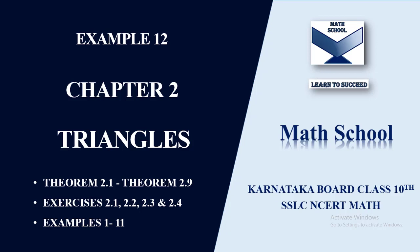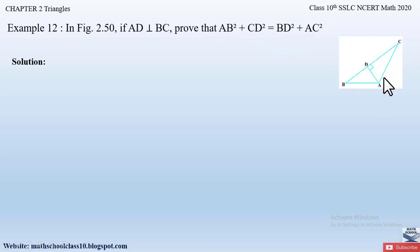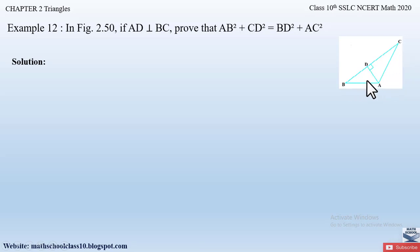Now let us begin with the video. Example 12 from Chapter 2: Triangles says — in figure 2.50, if AD is perpendicular to BC, prove that AB² + CD² = BD² + AC². This is the figure, and we are given that in this triangle AD is perpendicular to BC. We have to prove that AB² + CD² = BD² + AC².